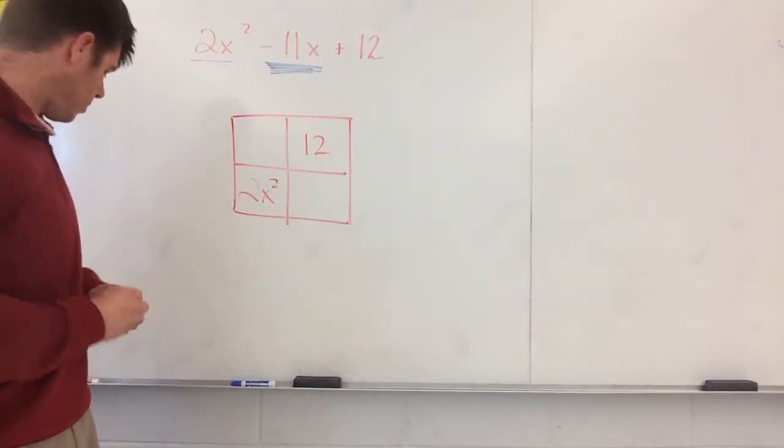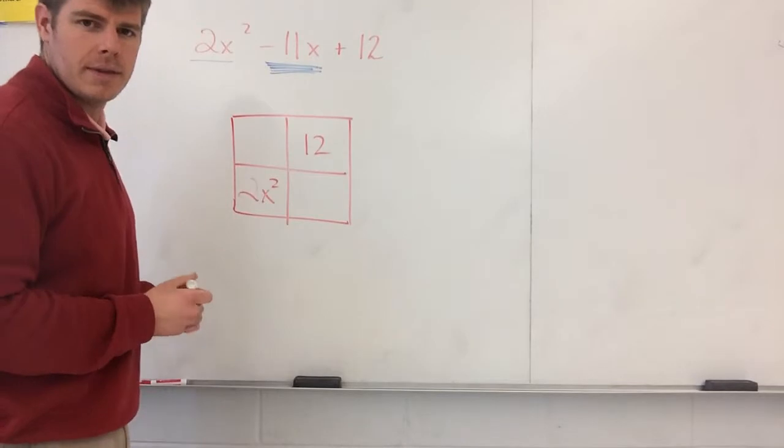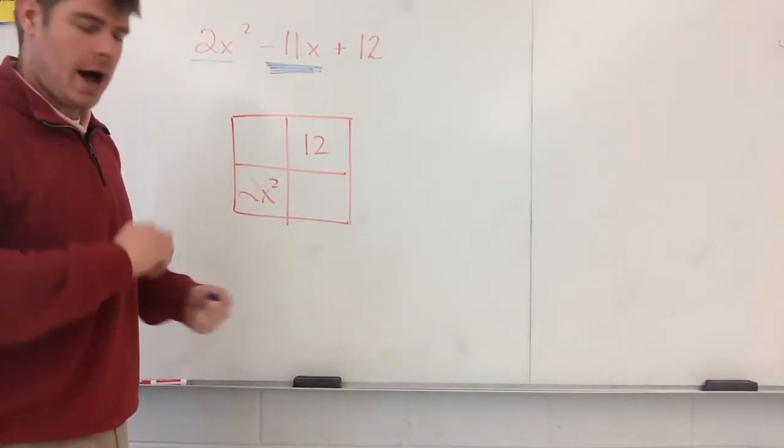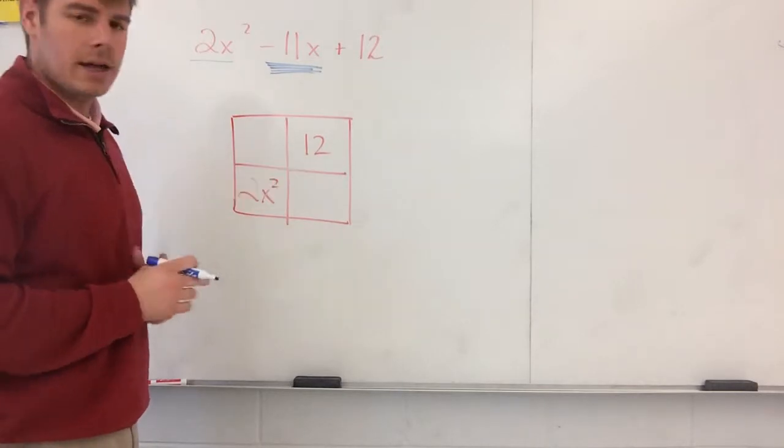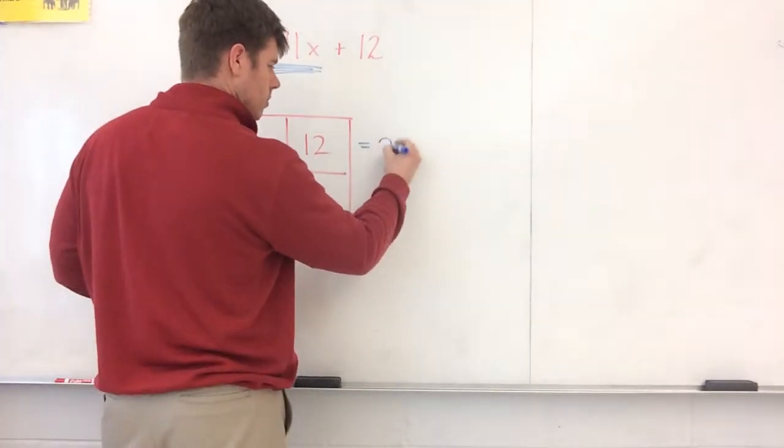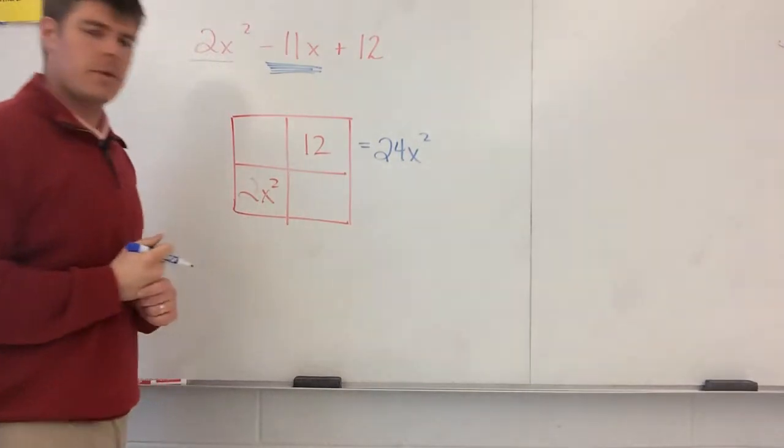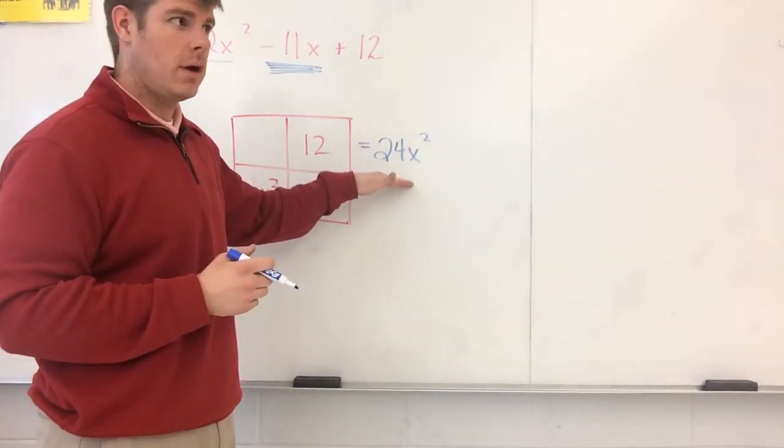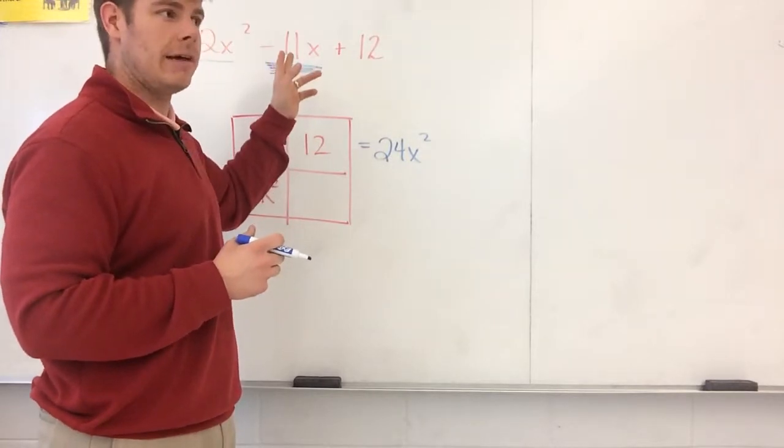Step three is to simply do the AC method. The AC method states that we multiply the X squared term times the constant. And what you have there is that this is going to be 24X squared. So what we now do with this is that we now look at the factors of 24 that can be manipulated to make negative 11.